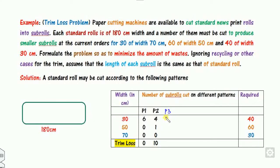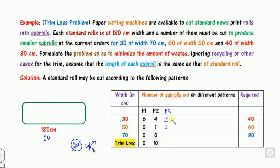For three 30 cm pieces, 90 cm is used, leaving 90 cm. From 90 cm we can cut either one 50 cm piece (leaving 40 cm, then possibly one 30 cm, leaving 10 cm waste) or one 70 cm piece (leaving 20 cm waste). Pattern P3 is (3, 0, 1) with 20 cm trim loss wastage.